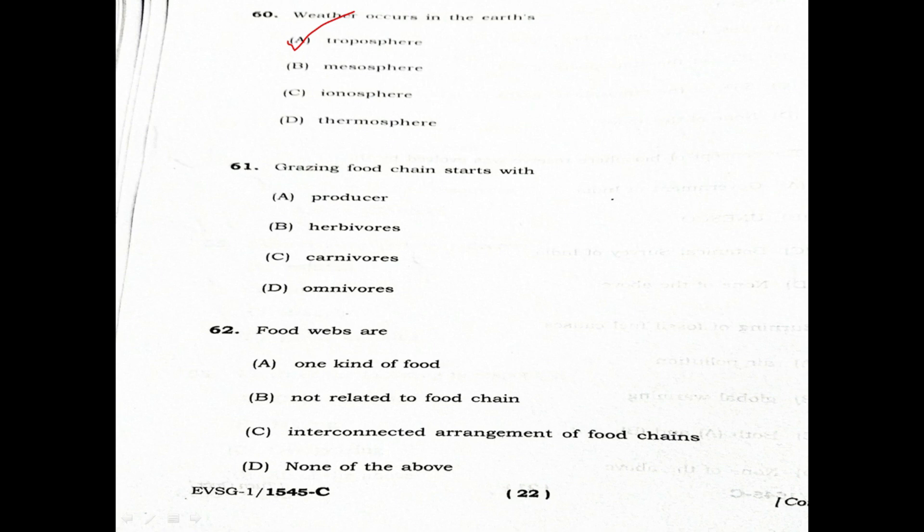Question 61: Grazing Food Chain starts with. Option A: Producer. Option B: Herbivores. Option C: Carnivores. Option D: Omnivores. The Grazing Food Chain starts with the Producer.